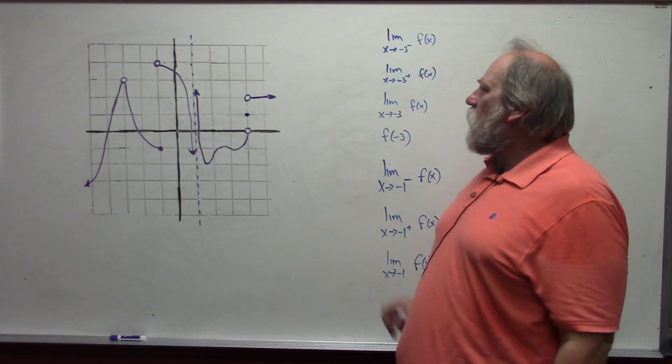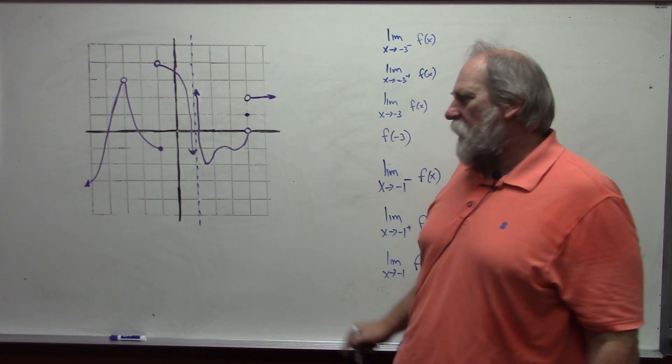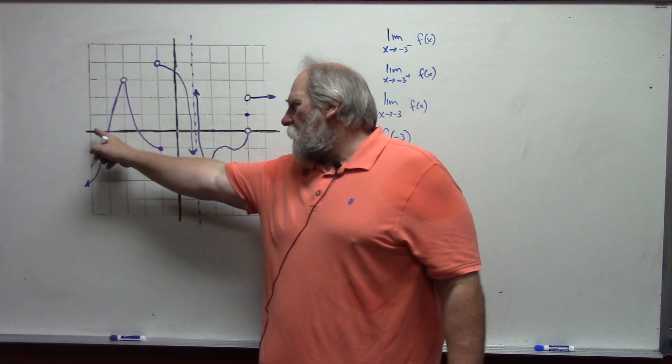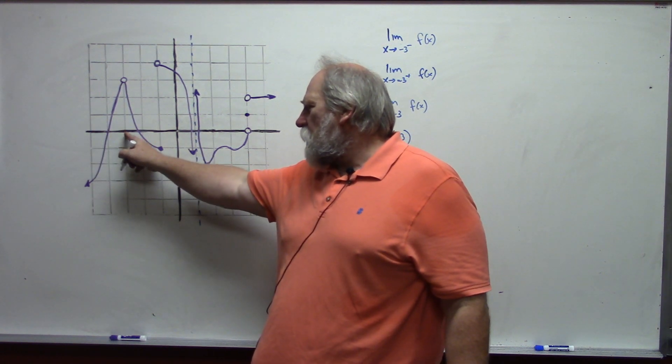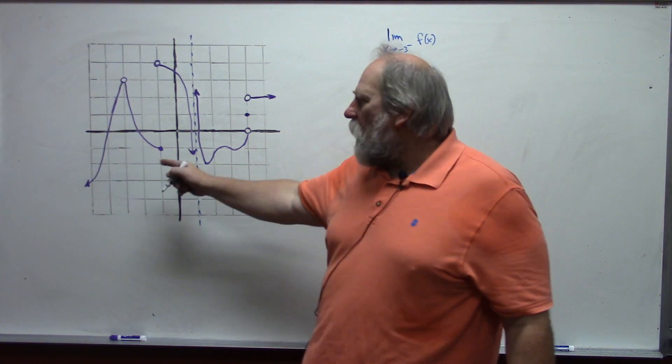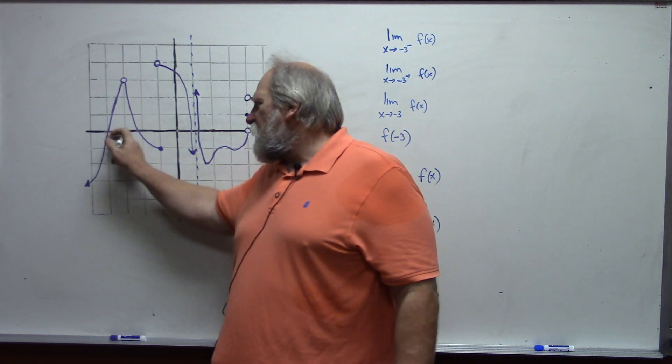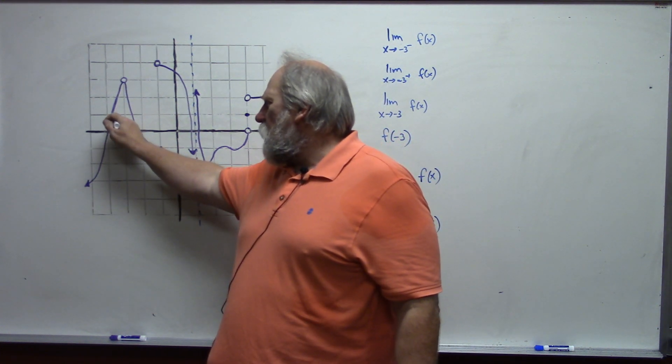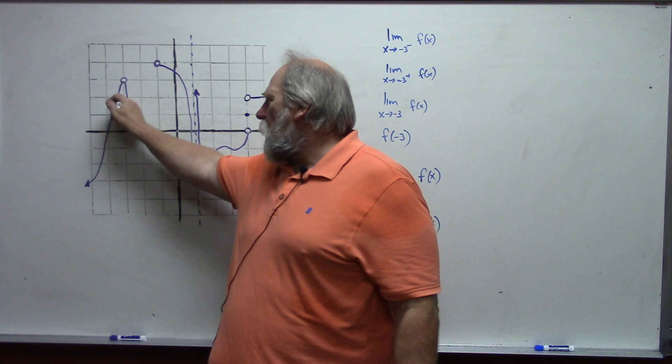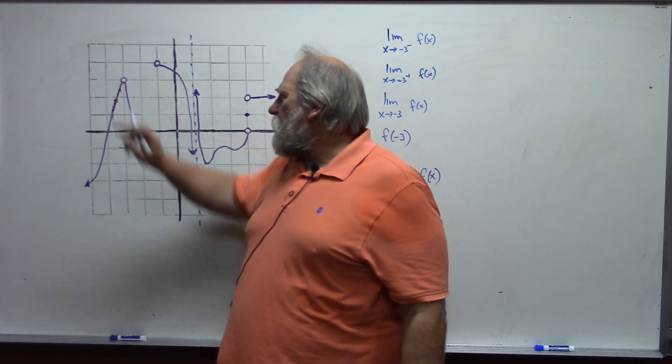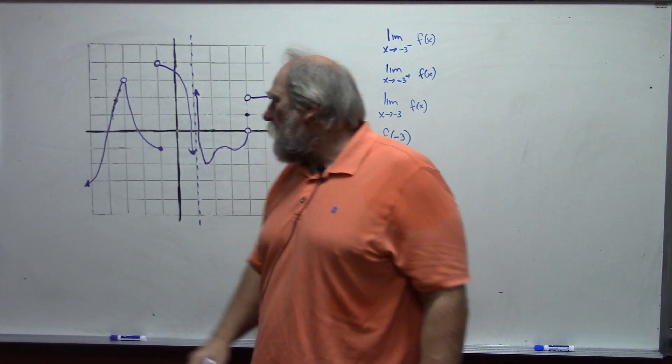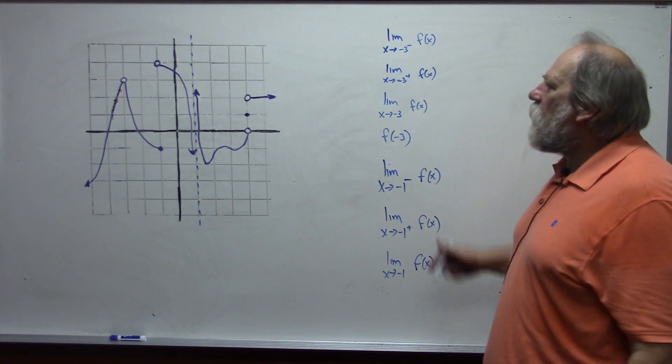So, first one, limit as x approaches negative 3 from the left. That means my x value is approaching negative 3, but I'm only going to consider values of x that are less than negative 3. So my function then is approaching this way, and it is approaching where that hole exists. That y value is 3.